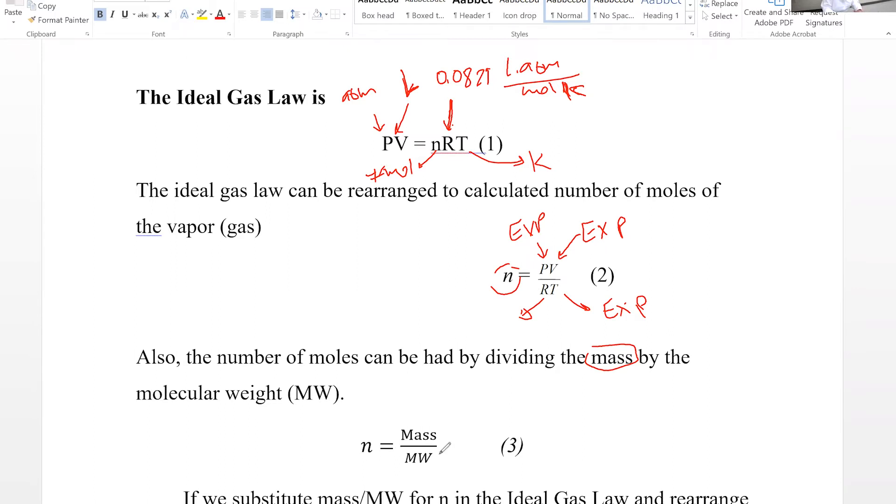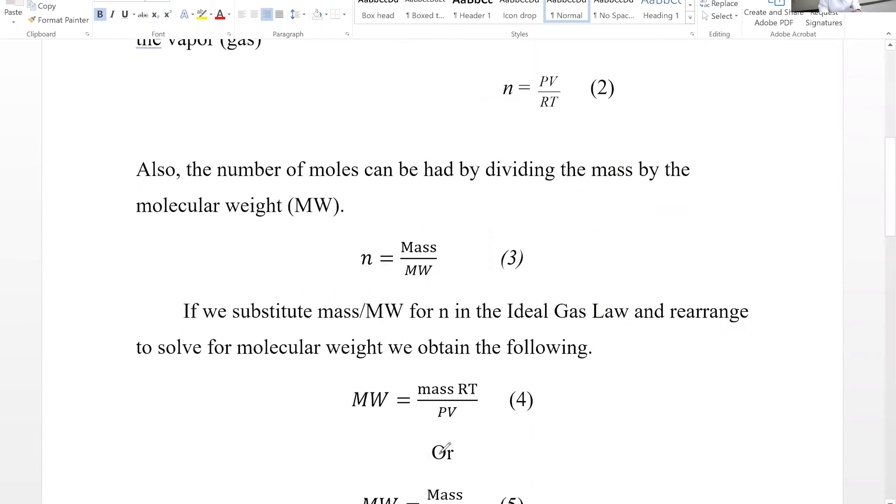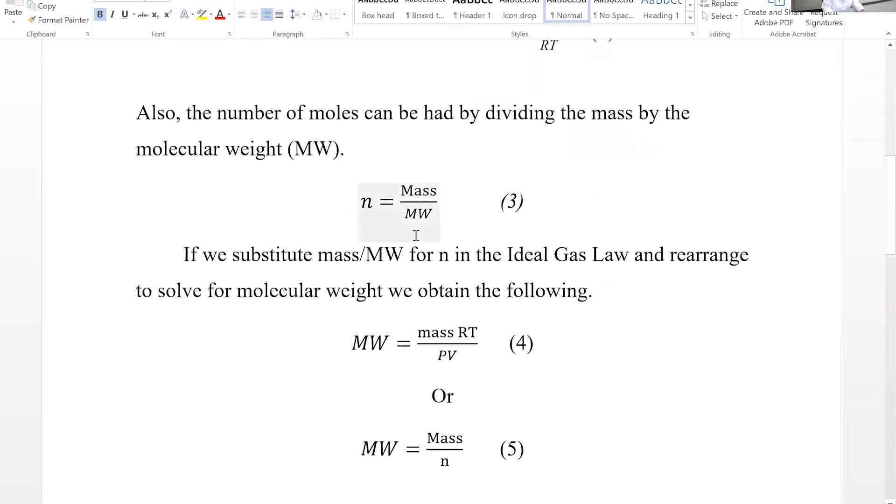From the mass and number of moles, then we can calculate the molar mass. If you rearrange this equation number three, molar mass is going to be mass divided by number of moles. So if we find the number of moles using the ideal gas law and we also separately find the mass for the vapor, then we use this equation five to find the molar mass.